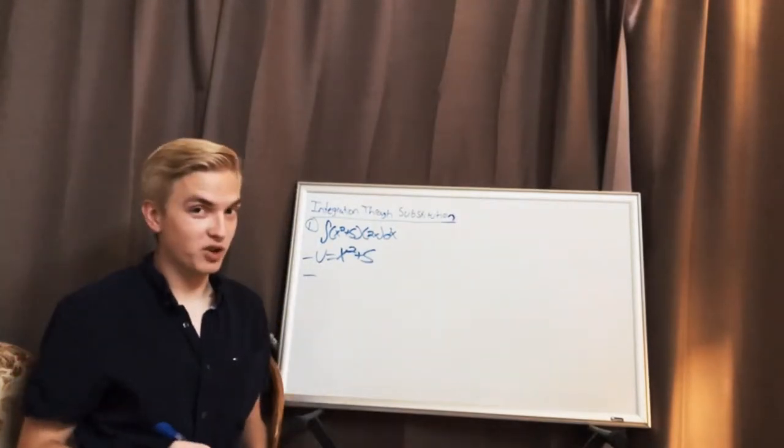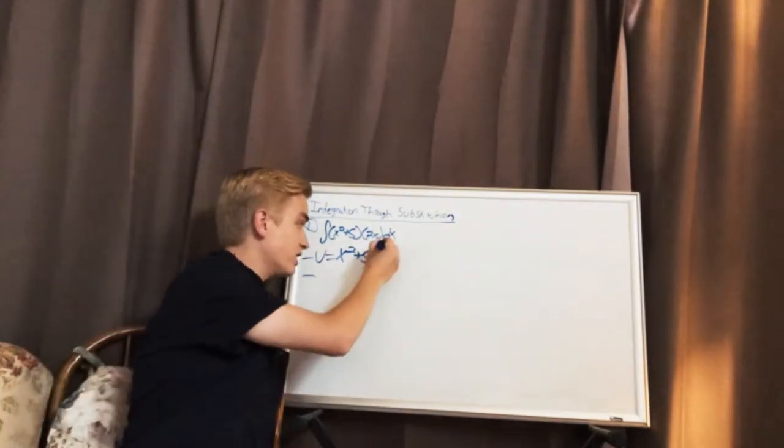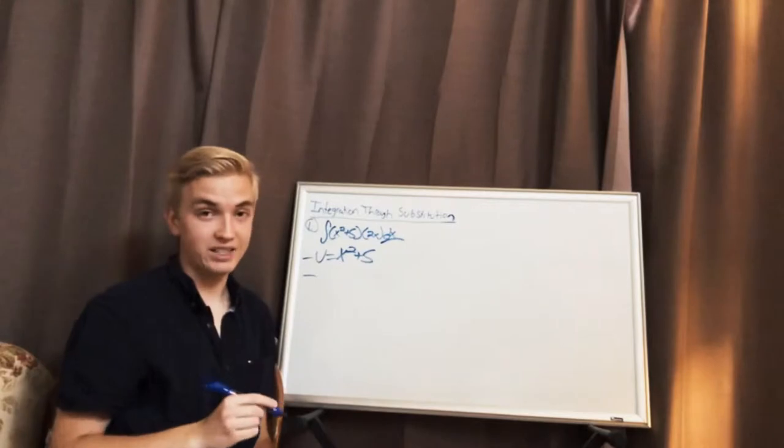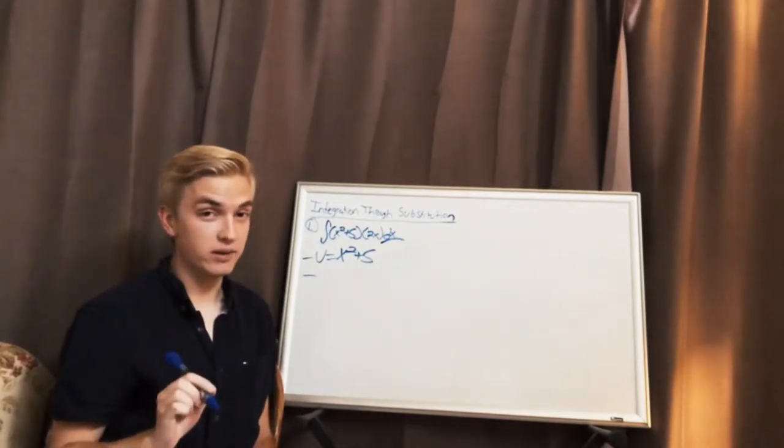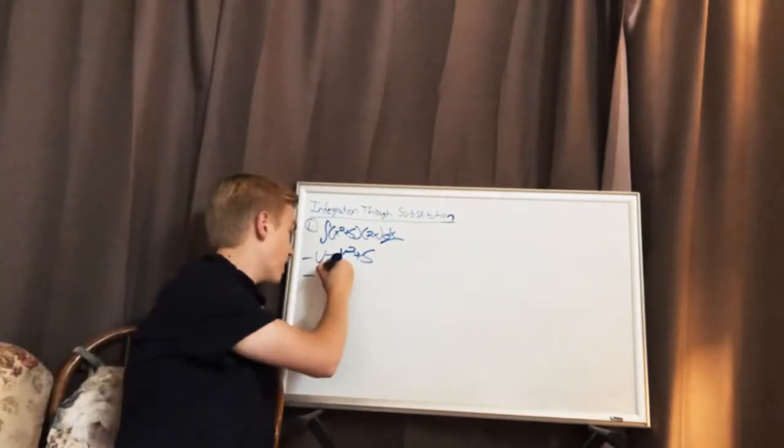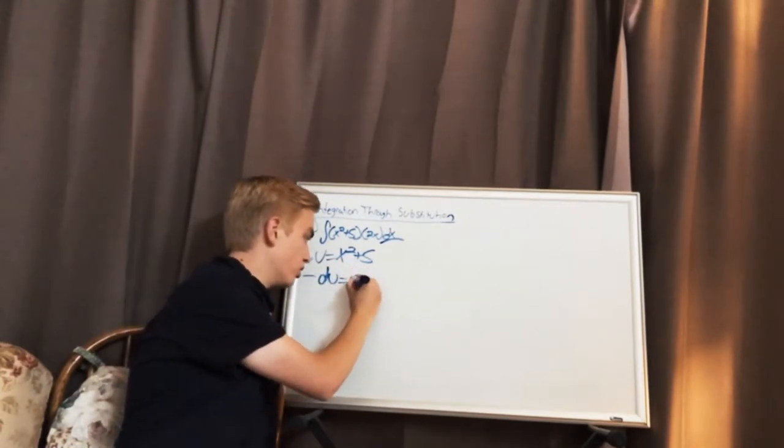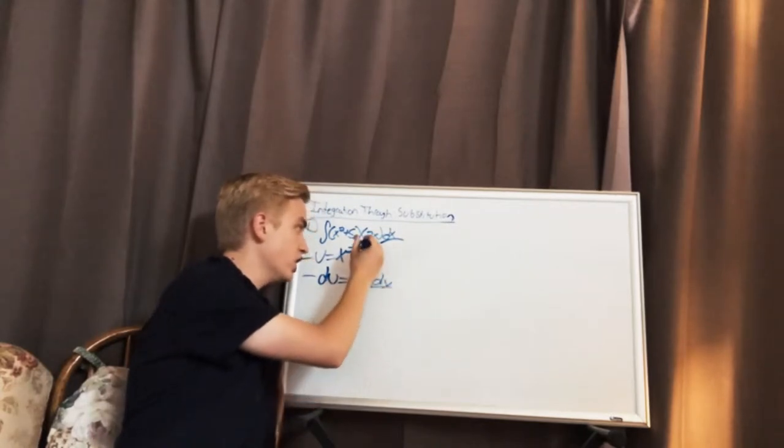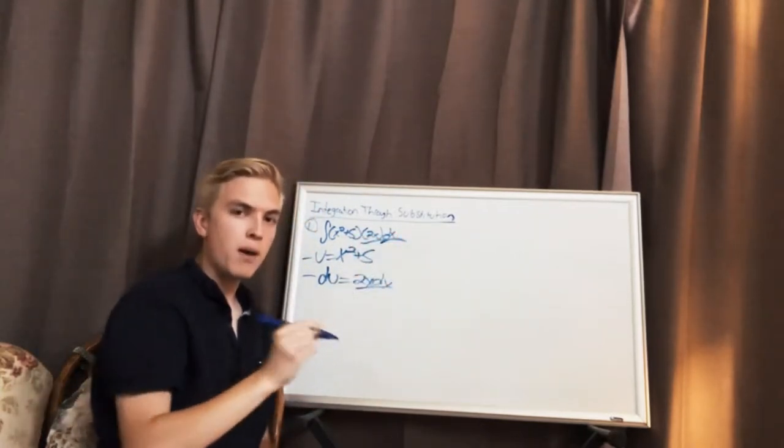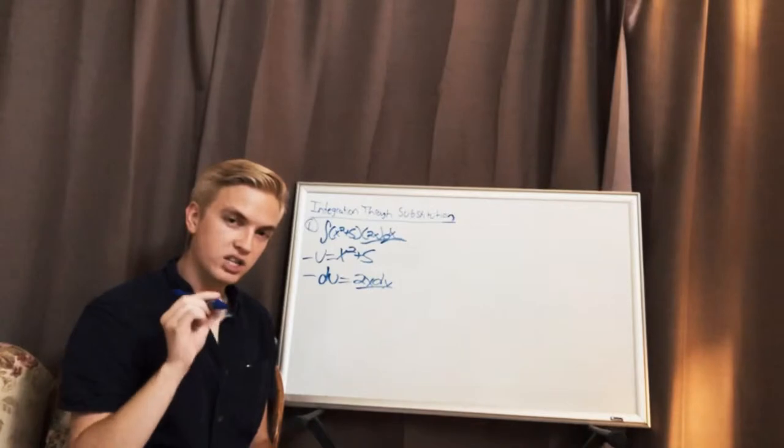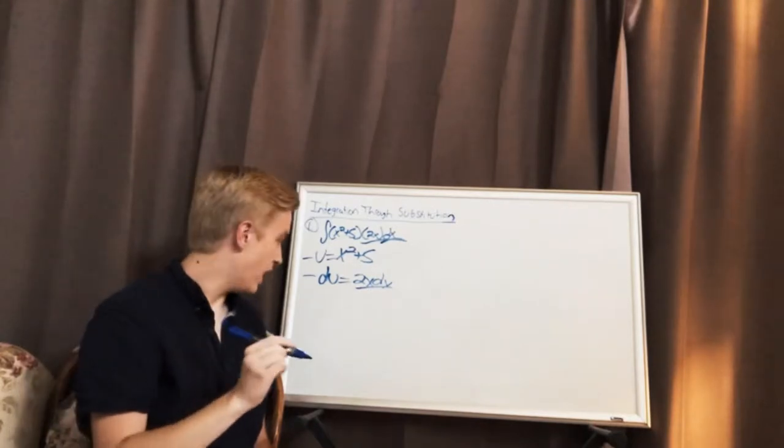We're in terms of u, which means that we are not taking the derivative with respect to x, and instead we are taking the derivative with respect to u, meaning we have to find du. And du in this case is equal to 2x dx. We have a 2x dx here and a 2x dx up top, meaning we can sufficiently substitute du for dx.